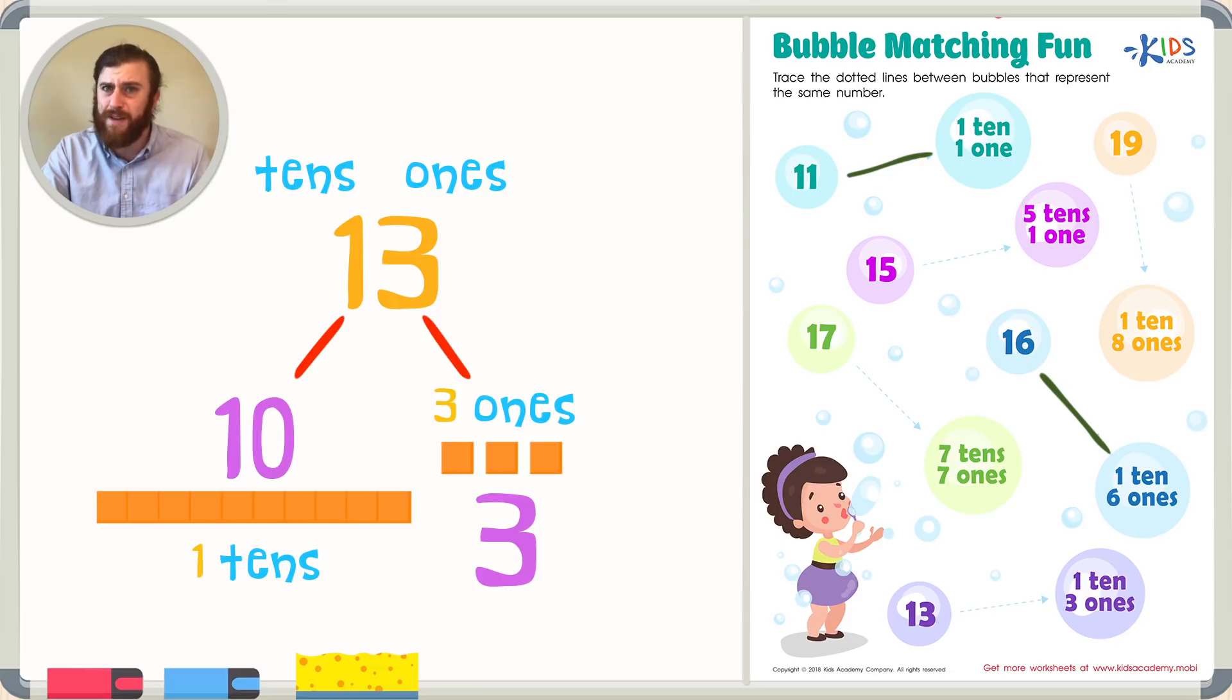So let's check our answer choice to see if this is correct. I see 1 ten, and again that's correct, and I see 3 ones, and again that's the same too. So 13 is represented by 1 ten and 3 ones.